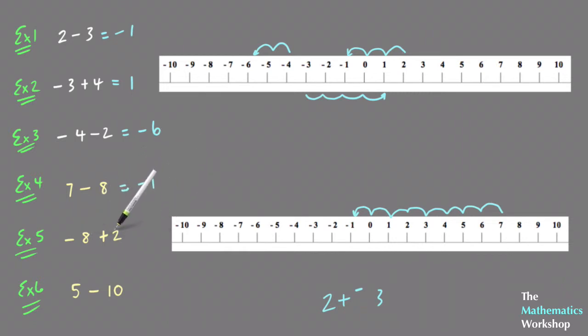Minus 8 plus 2: starting on minus 8 and moving 2 to the right. So starting here and going 2 to the right, you end up on minus 6. So minus 8 plus 2 equals minus 6.